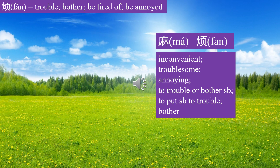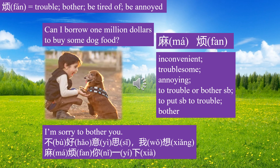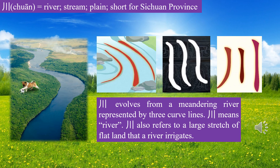麻烦 means inconvenient or trouble. I'm sorry to bother you — 不好意思，我想麻烦你一下. Can I borrow one million dollars to buy some dog food? I never speak ill of others to their faces — would you please turn around? 麻烦你转过身好吗?